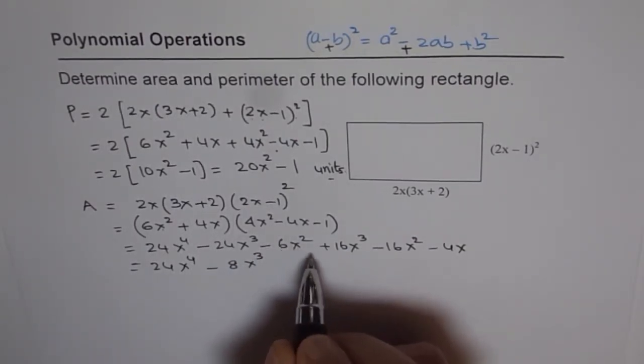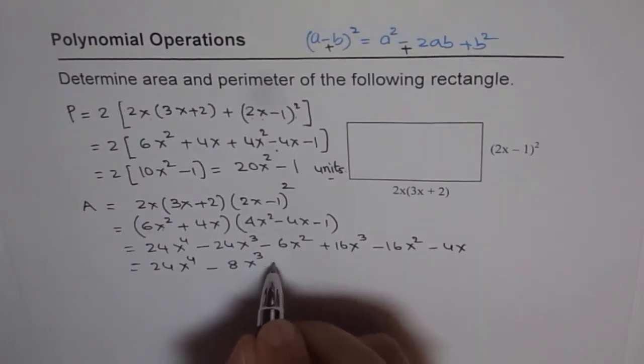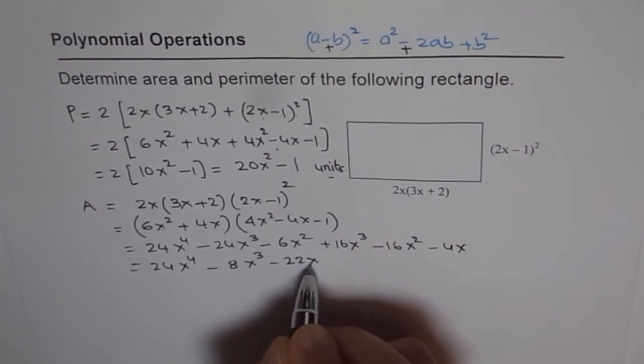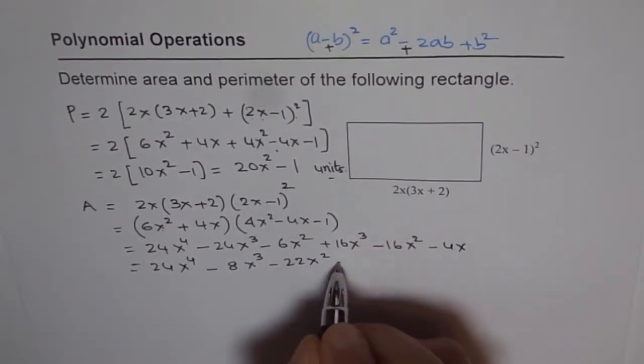The square terms minus 6 and minus 16 gives us minus 6 and 16, minus 22x squared. And then we have minus 4x.